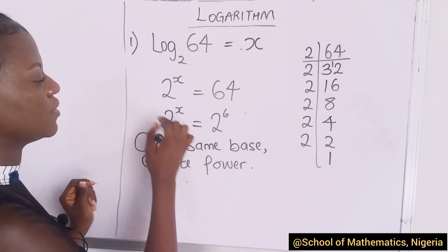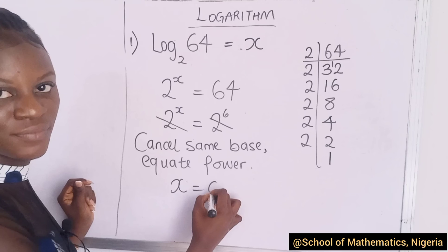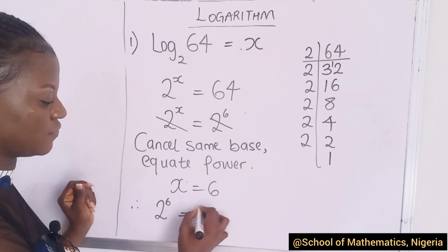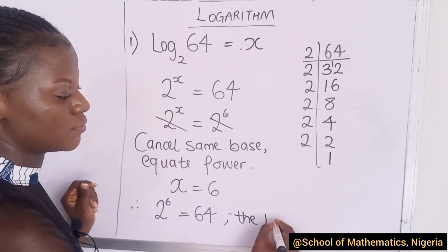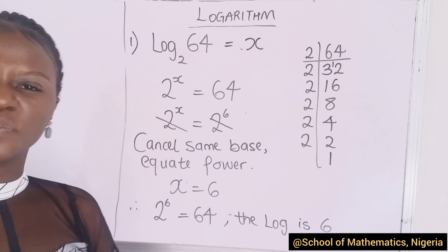Now, you have same base which can go, and then you're left with 6. What does this mean? This means that 2 raised to the power of 6 is what would give you 64. So, your log, the log is 6. I hope you got it.